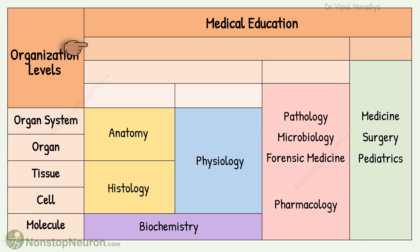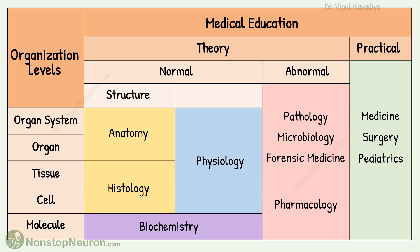When it comes to treating a patient, broadly there are two aspects that you need to learn: the theoretical part and the practical part. Theory can be further divided into the study of a normal healthy body, and the study of abnormalities.